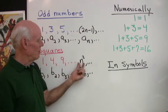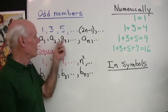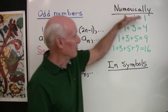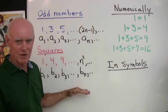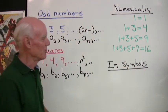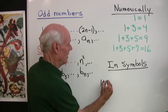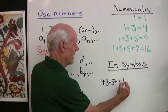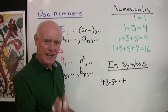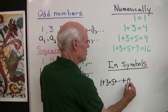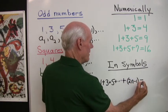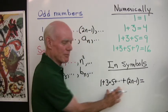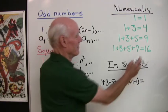So the nth term in the sequence of squares is n squared. The nth term in the sequence of odd numbers is 2n minus 1. How do we show this relationship using symbols? We say: if I add 1 plus 3 plus 5 plus ... plus the nth odd number, which is 2n minus 1, I get n squared.